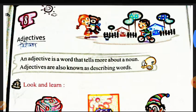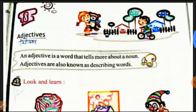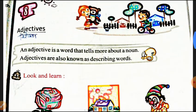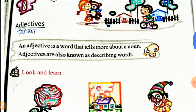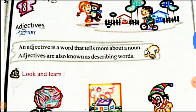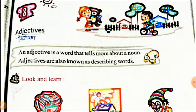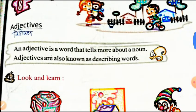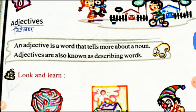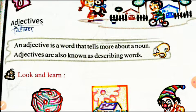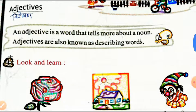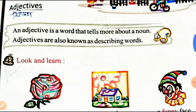When we describe nouns and tell about them, we call it an adjective — meaning to describe it, to tell about a noun. So adjectives are also known as describing words.